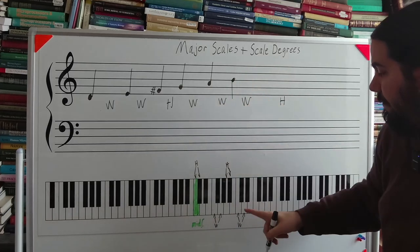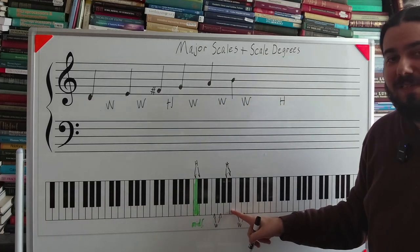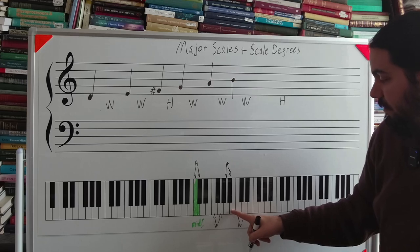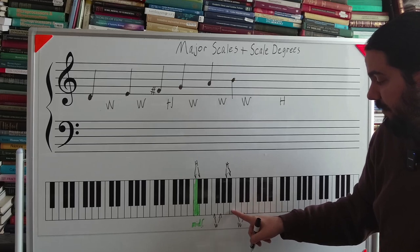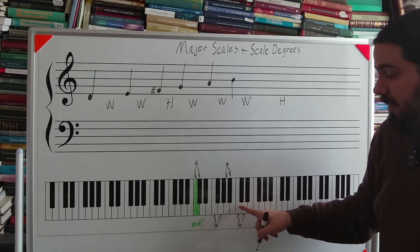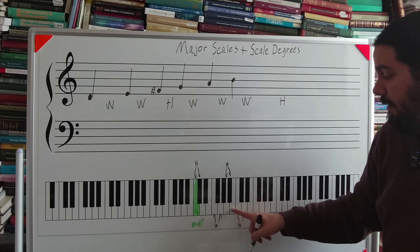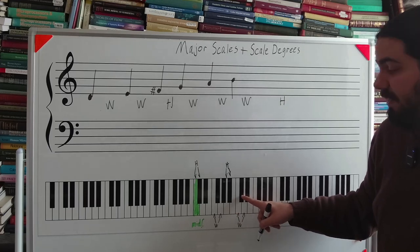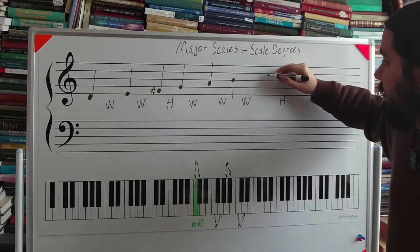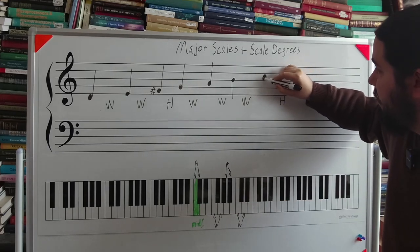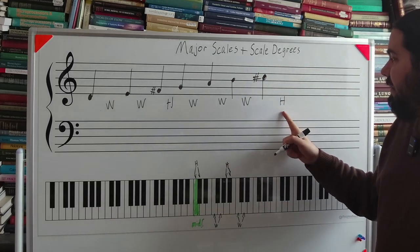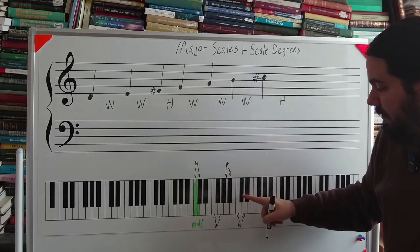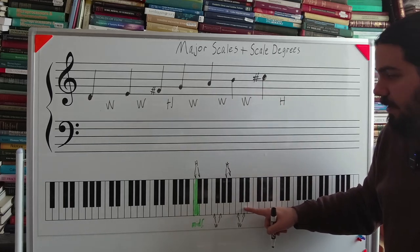Whole step up from B, similar to the whole step up from E, not C but C sharp. So again, from B to C, half step. From B to C sharp, whole step. To denote a C sharp, you just put in a C and then another hashtag. Then finally, we need a half step up from C sharp, which is our D.